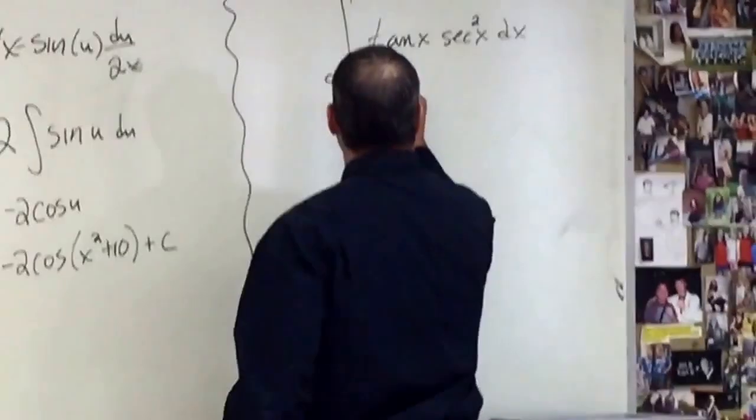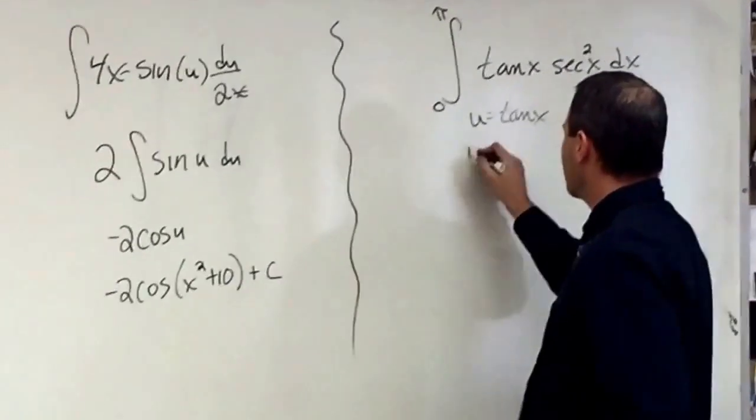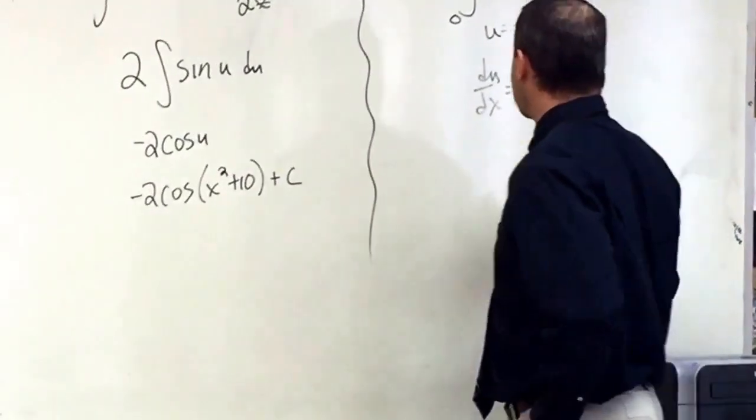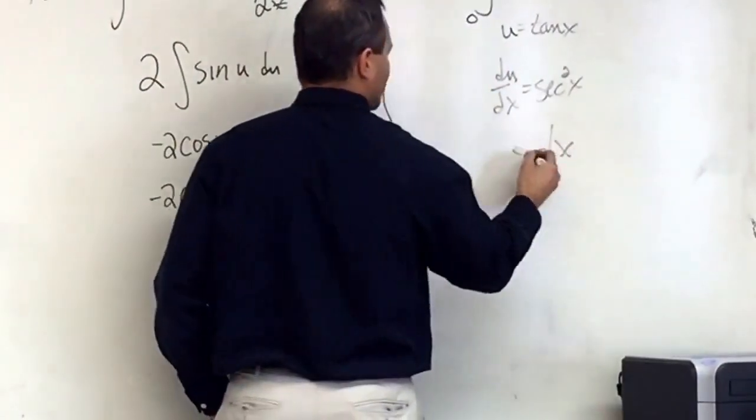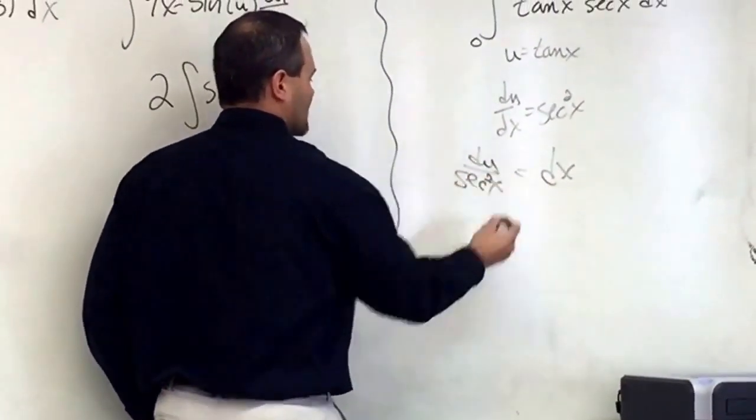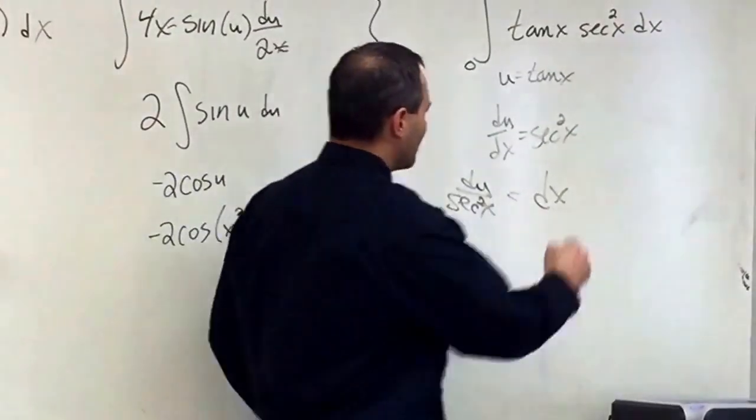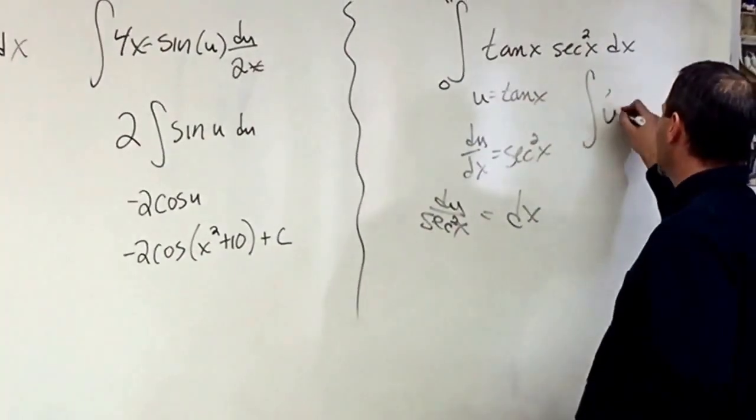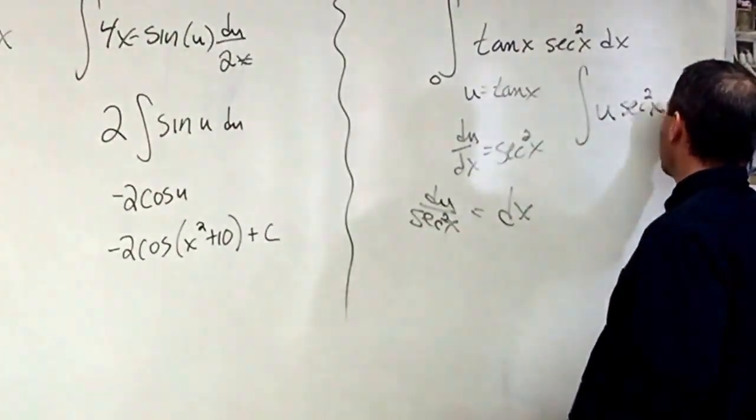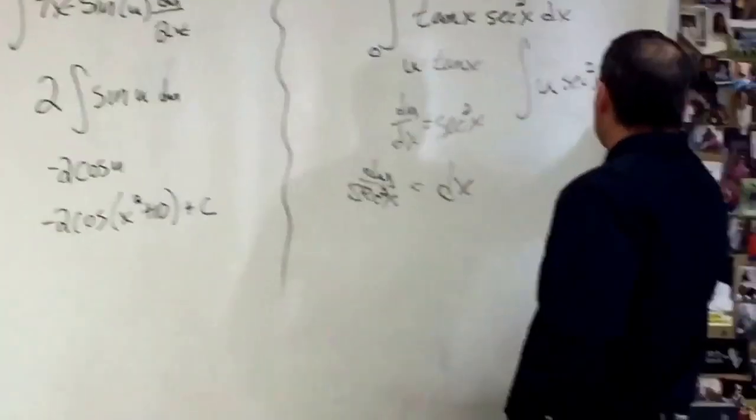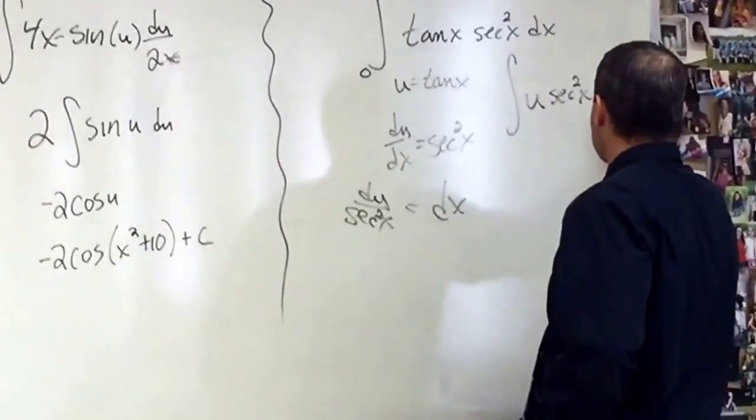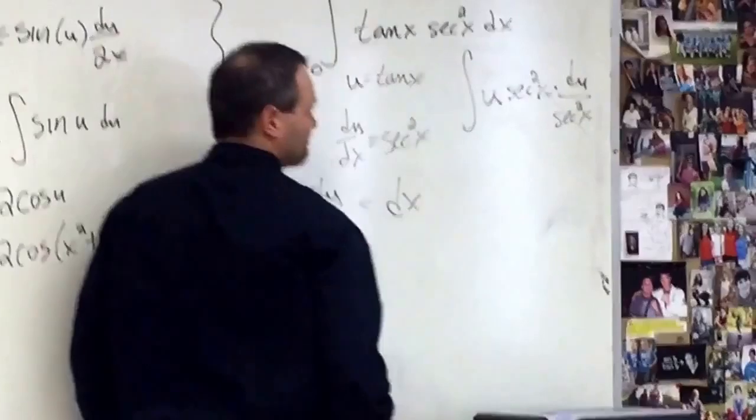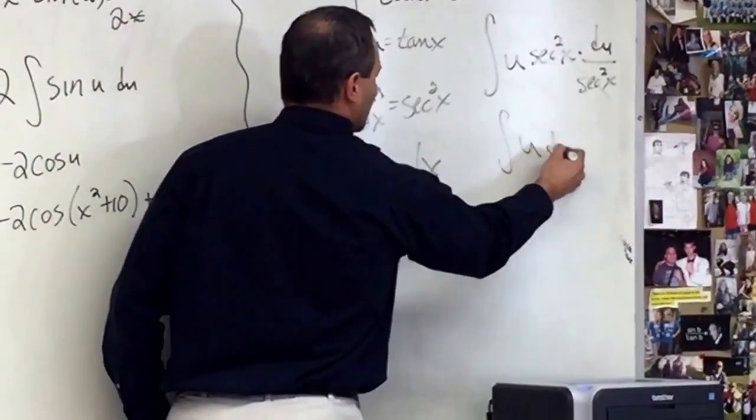If we choose u as our tangent x, then du dx equals secant squared x. Solving for dx, that is du over secant squared x. Rewriting our integral, it's u secant squared x dx, which is du over secant squared x. So we have integral of u du.